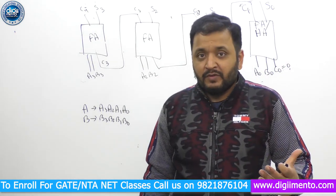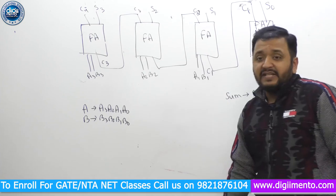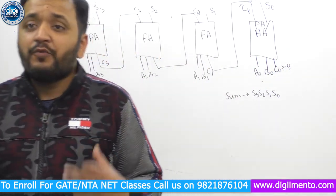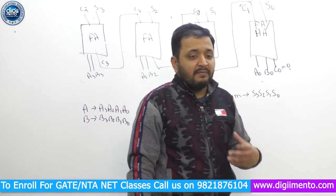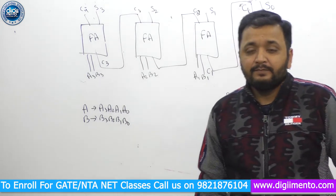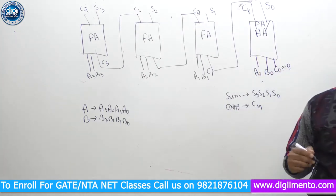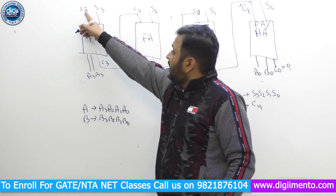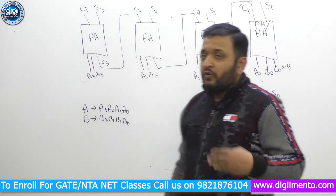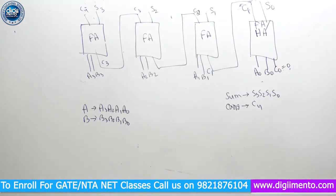So the final sum output will be S3, S2, S1, S0 and the final carry output will be C4. So the sum and carry together form the full and final output — this is your 4-bit addition result.